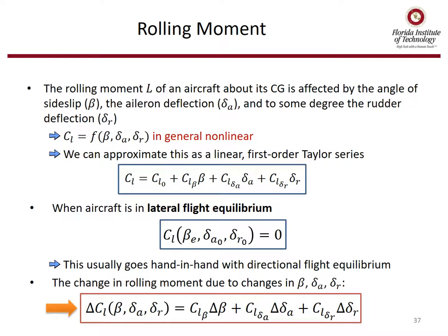Now let's switch to rolling moment. The rolling moment L of an aircraft about its CG is affected by the angle of sideslip, the aileron deflection, and to some degree the rudder deflection. Just like the yawing moment equation, we can derive a similar equation for the rolling moment, and in lateral flight equilibrium that rolling moment coefficient is zero. The bottom equation shows the change in rolling moment due to changes in beta, delta-A, and delta-R.